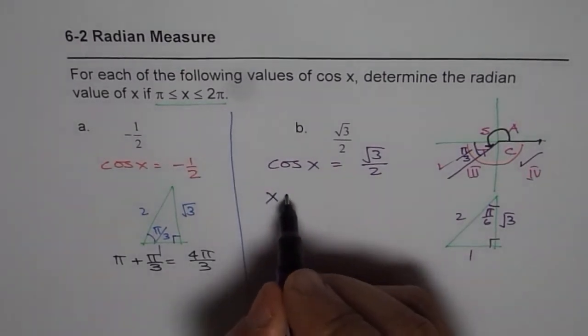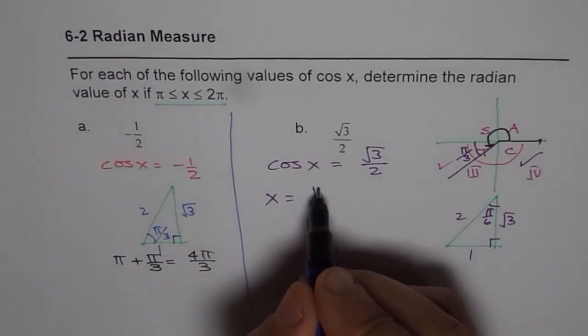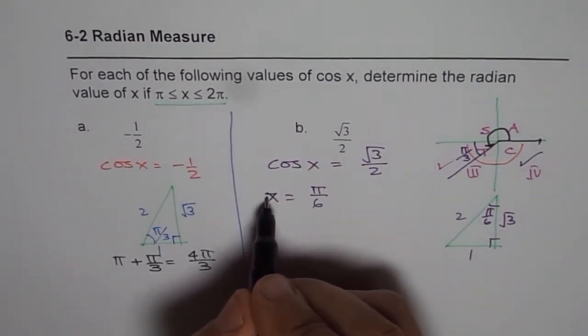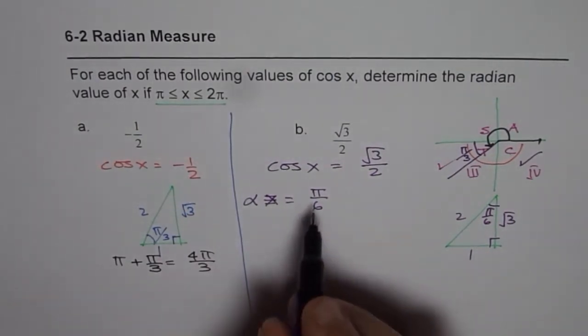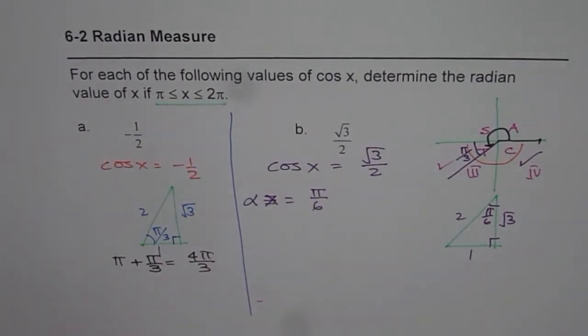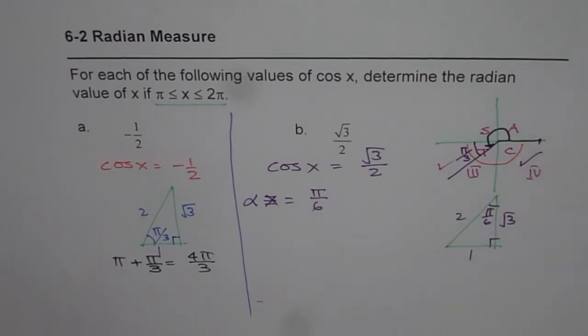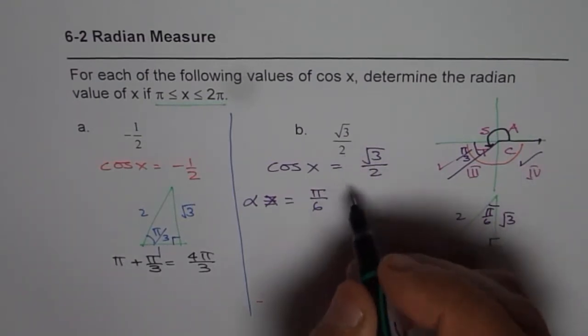Now cos(π/6) is √3/2. Therefore, we can write x equals π/6. Actually, I should say the related acute angle α equals π/6. Now what is x? Let me redraw this.